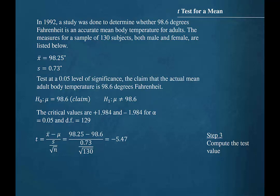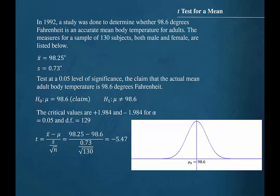Step four is to make the decision to reject or not reject the null hypothesis. It is always a good idea to visualize the orientation of the critical values and the test value by placing them on a graph of the hypothesized distribution. We have a normally shaped sampling distribution with a hypothesized population mean of 98.6.